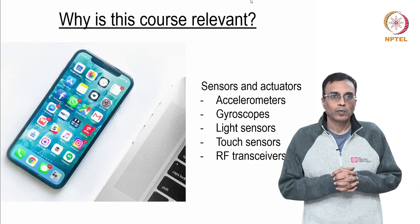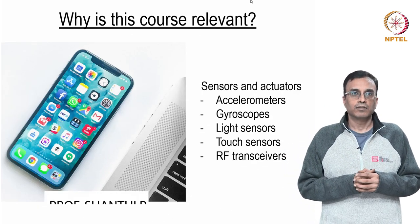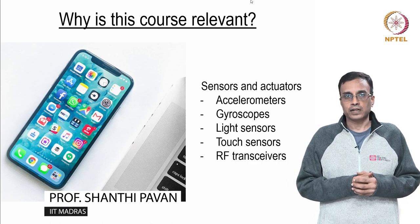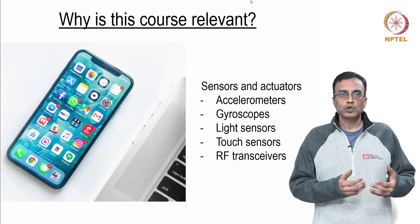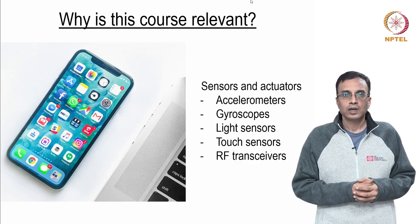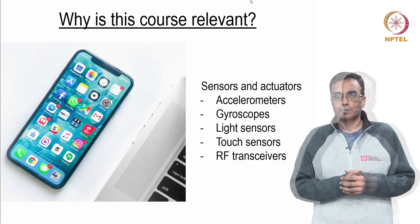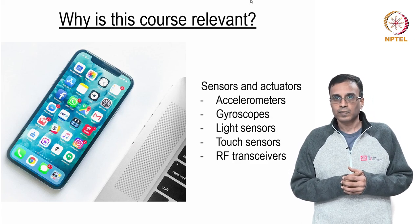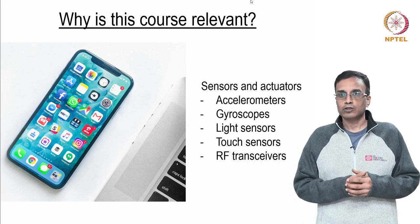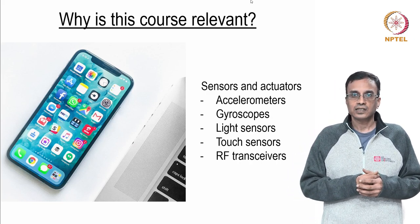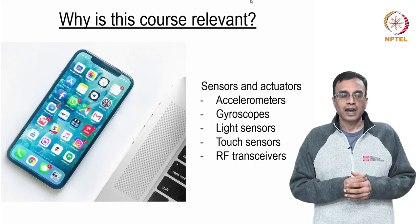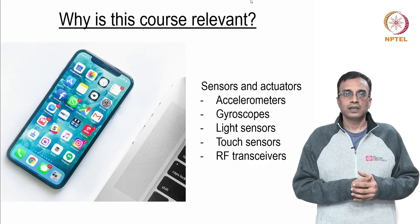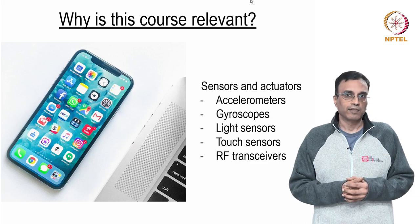Why is this course relevant? To motivate the need for a course like this, we don't need to look further than our pockets and reach for our phones. A cell phone today comes equipped with a variety of sensors — for example, accelerometers, gyroscopes, light sensors, touch sensors, and of course RF transceivers. What does the signal processing behind each one of these sensors have in common?